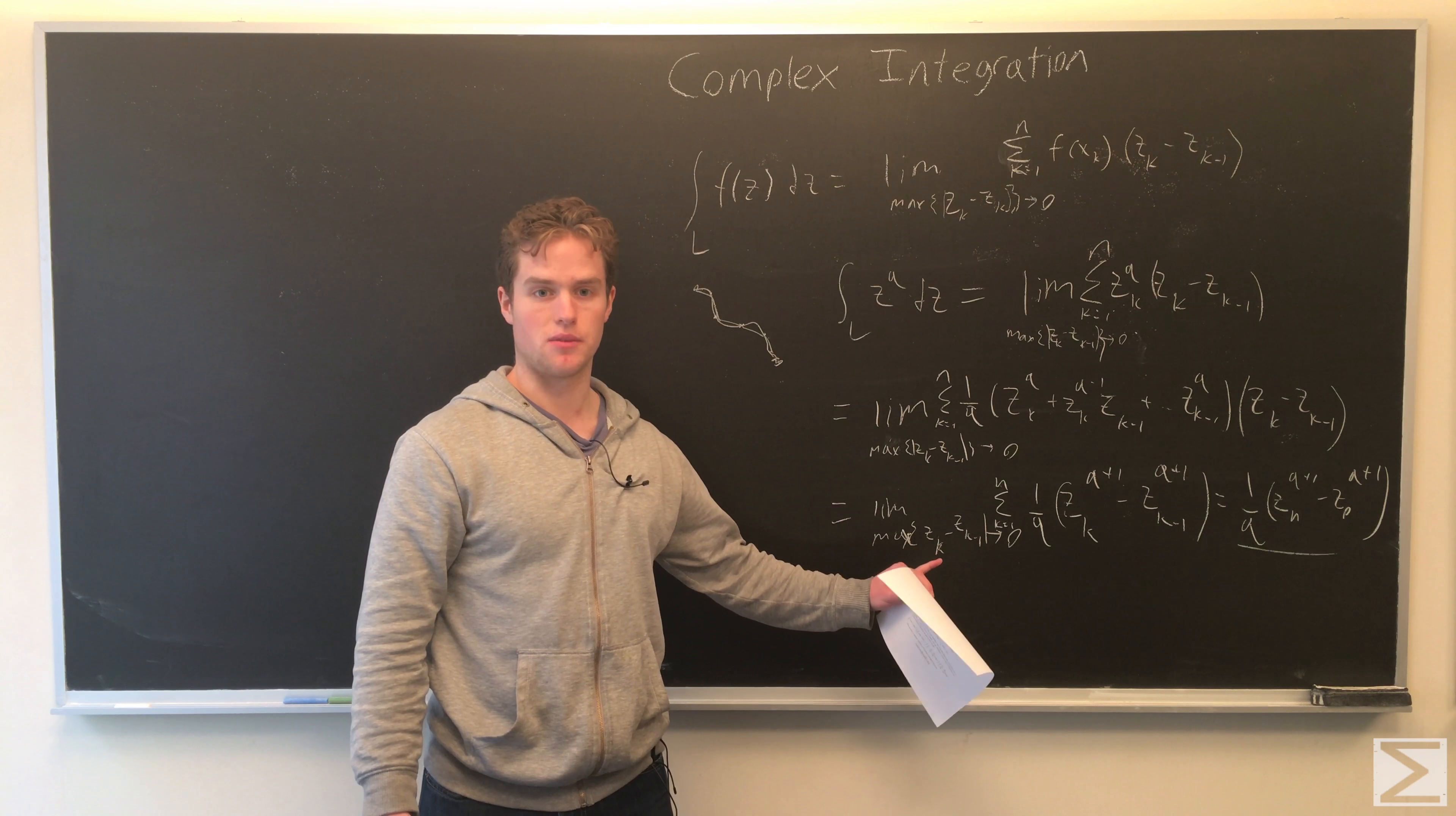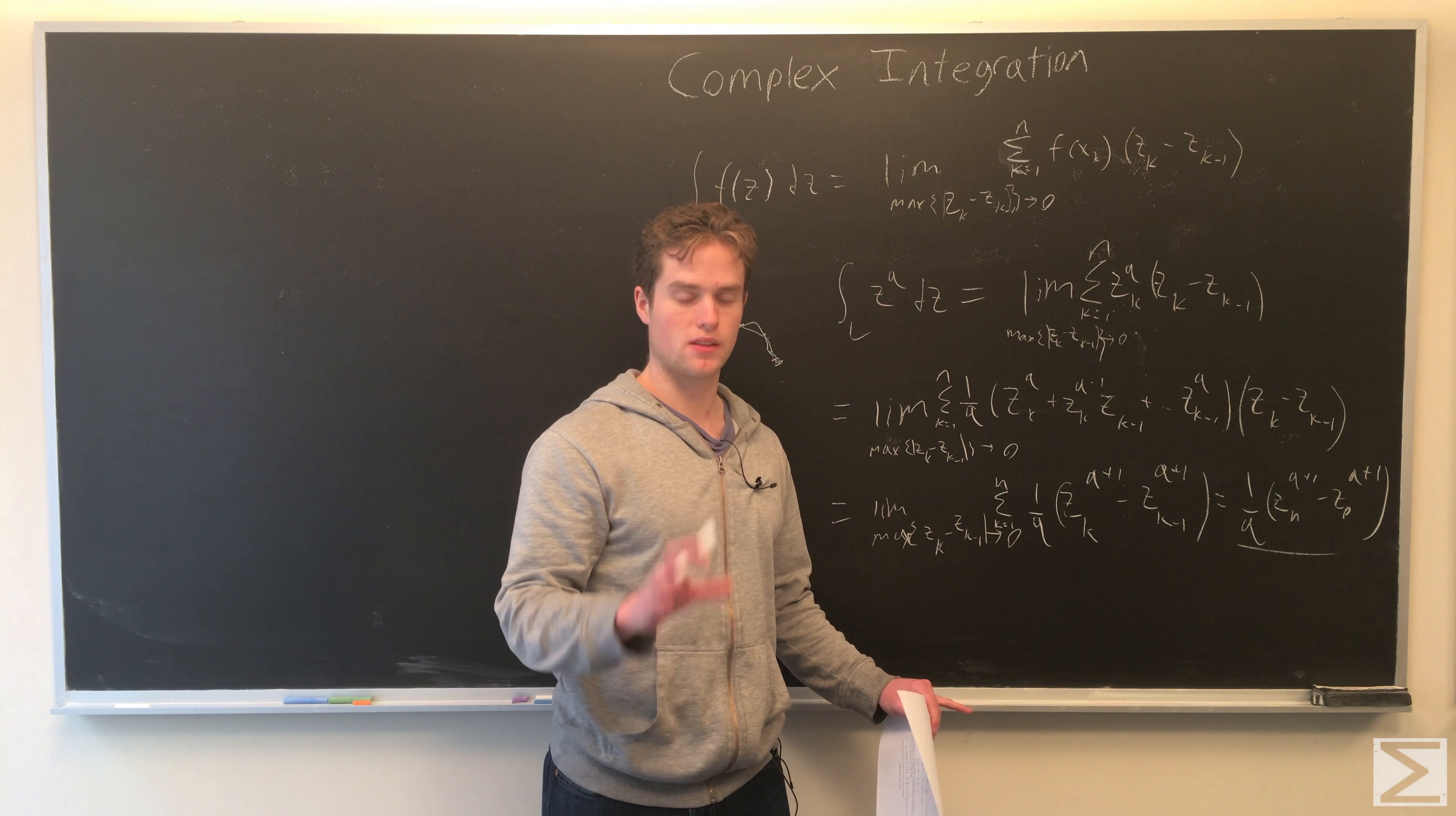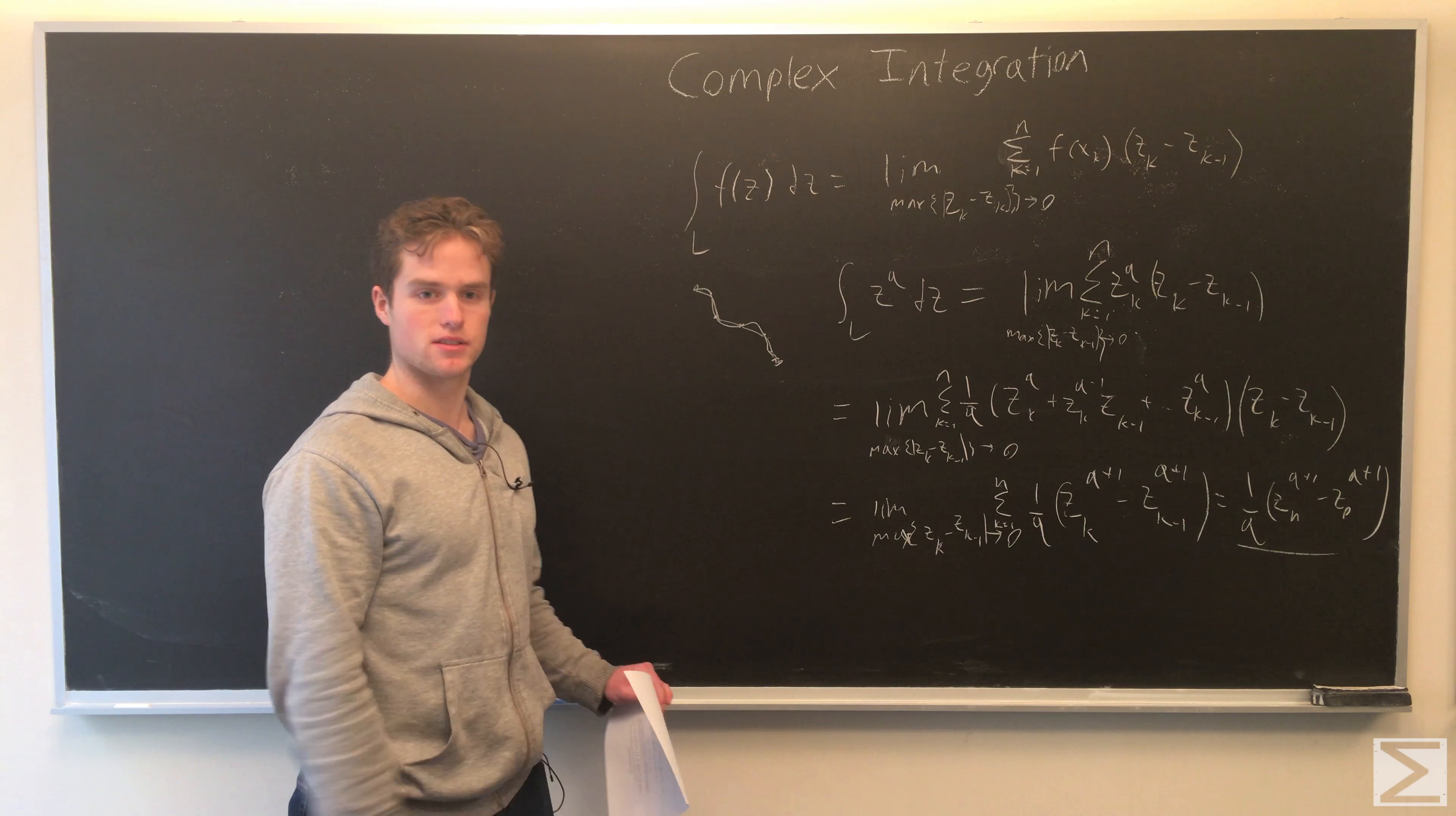Adding all this up, we note the sum telescopes—all these terms cancel out, and we're left with just 1 over q times z_n to the (q+1) minus z_0 to the (q+1). So this is 1 over q times the final point to the (q+1) minus the initial point to the (q+1), which looks pretty similar to regular integration, although there are important differences. That's an example of a complex integral.